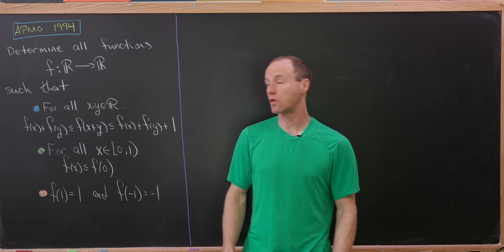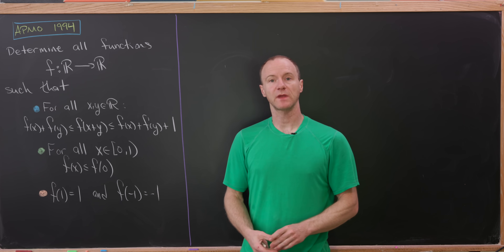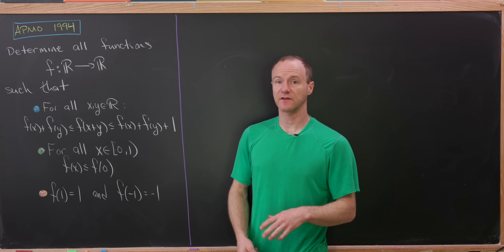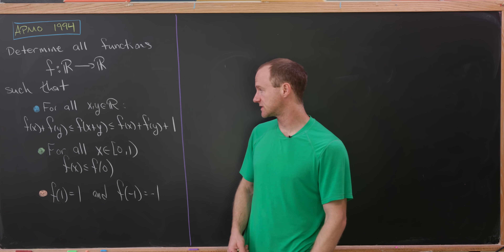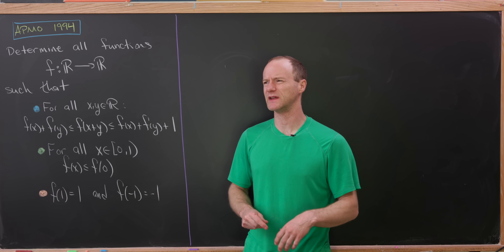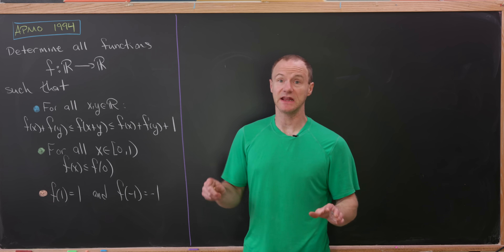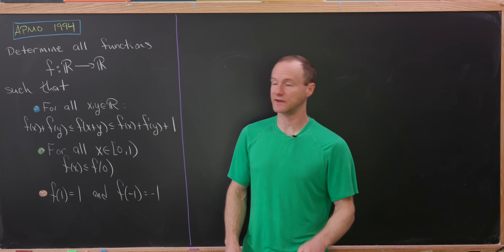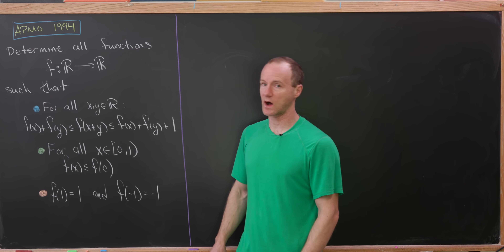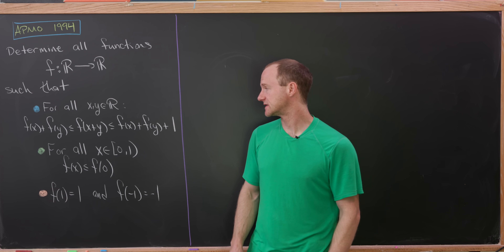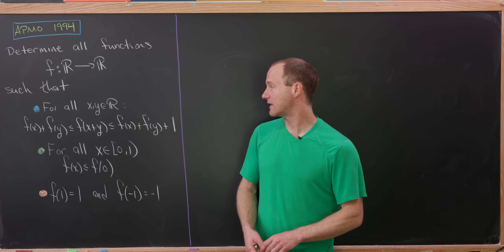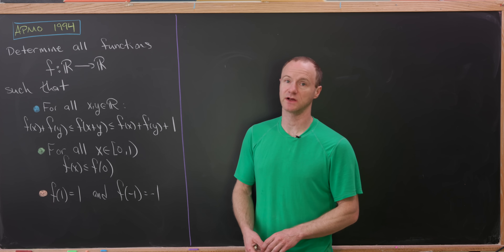Today we're going to look at a nice functional inequality problem. Our goal is to determine all functions from ℝ to ℝ satisfying three properties. The first one drives a lot of our arguments: for all real numbers X and Y, F(X) + F(Y) ≤ F(X+Y) ≤ F(X) + F(Y) + 1.